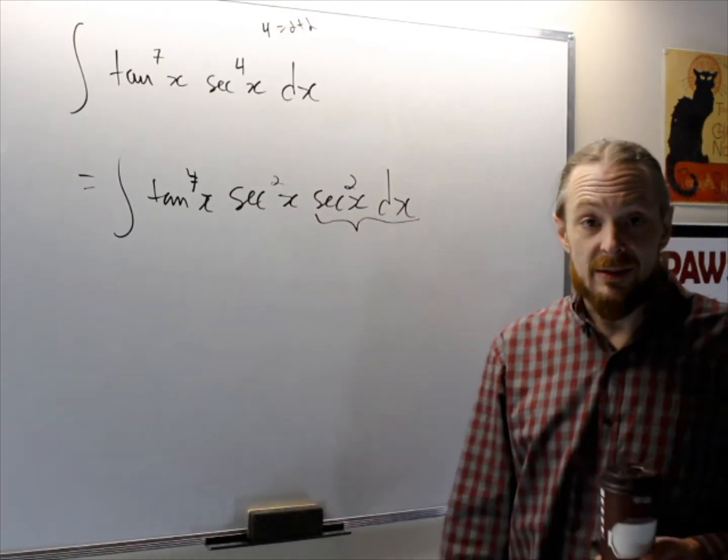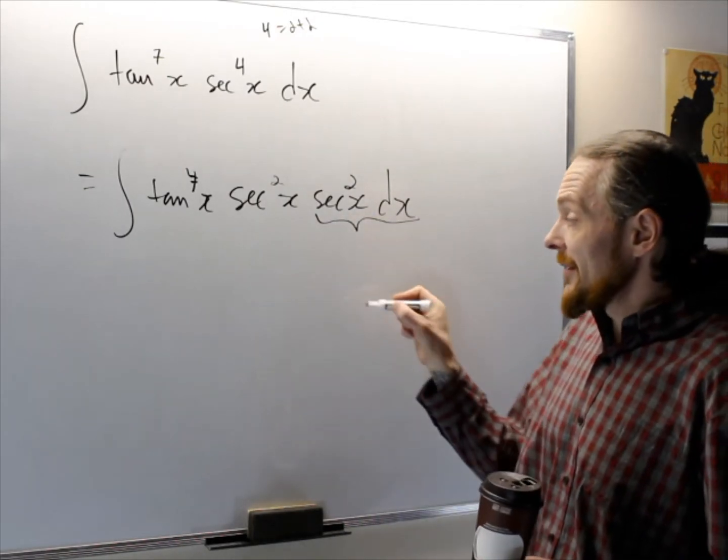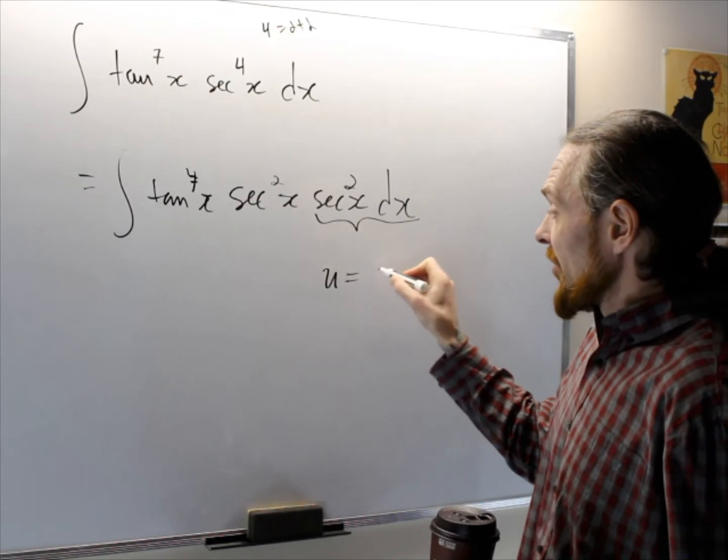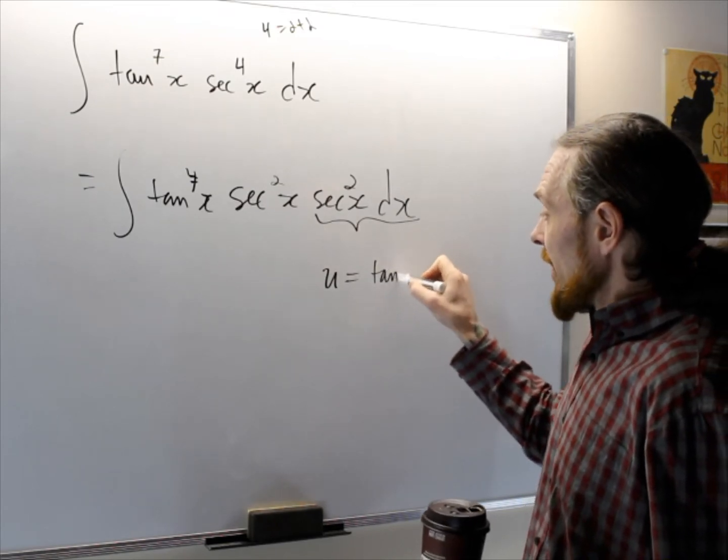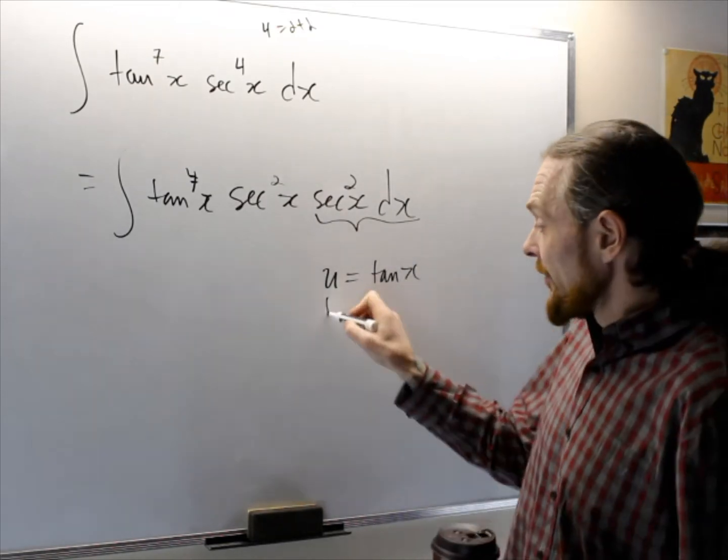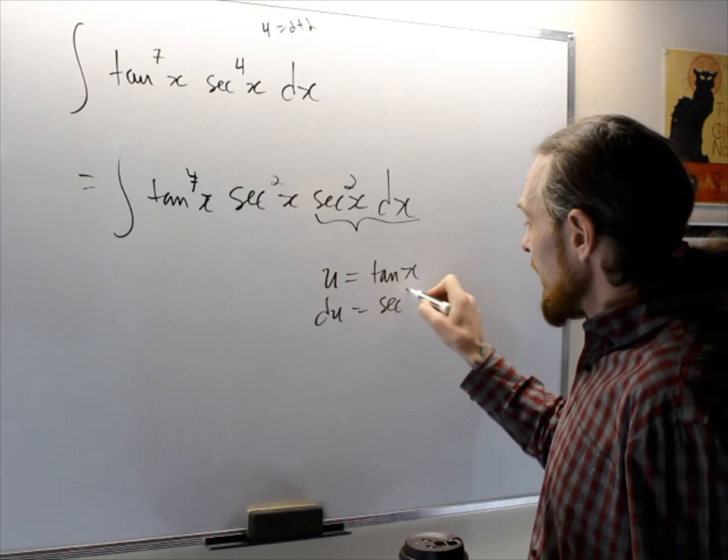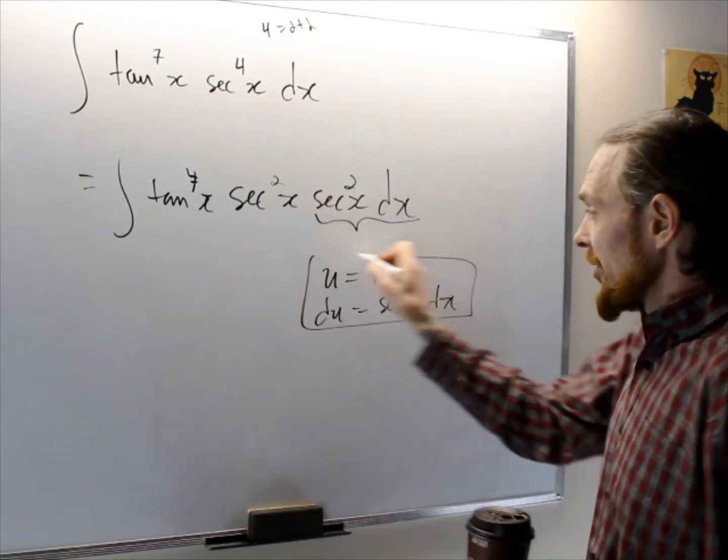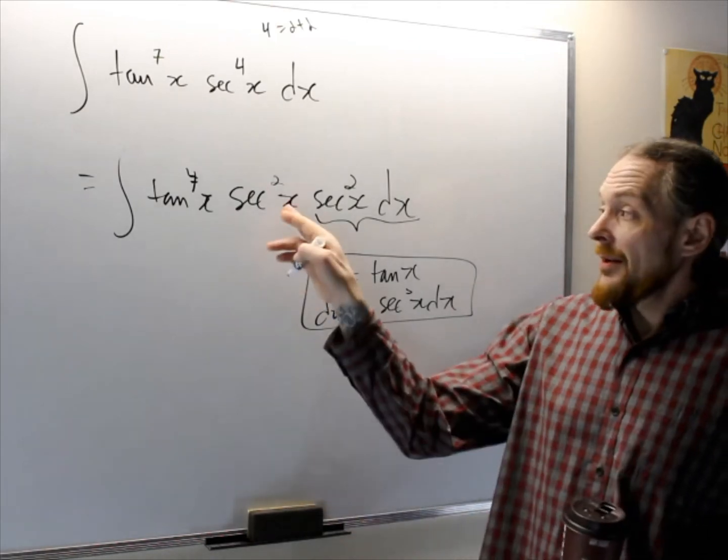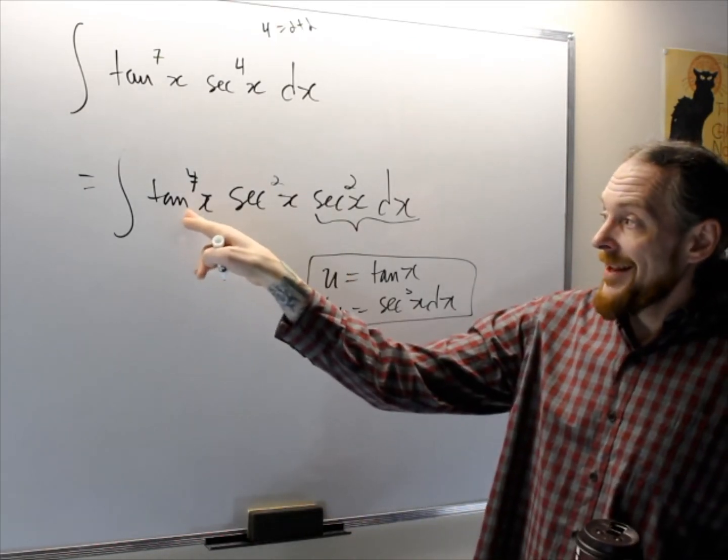What I'm now doing is trying to see in my mind that I've already stolen the differential. The differential is this, so what I'm going to make is my substitution as u equals tan x, and then du can be secant squared x dx. Now I know what my substitution is supposed to be.